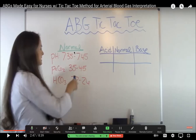pH homeostasis has two compensatory mechanisms: breathing (measured by PaCO2 — what your chemoreceptors monitor) and metabolic (measured by bicarbonate HCO3⁻ in the blood). If you have too much hydrogen ion, you breathe more to exhale CO2. This is why new runners get muscle cramps — buildup of hydrogen ion causes acidosis. So increased PaCO2 means acidotic; decreased PaCO2 means alkalotic.